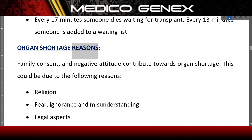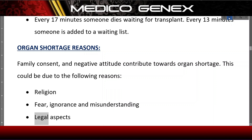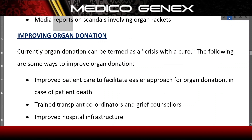Family consent and negative attitudes contribute towards organ shortage. This could be due to the following reasons: religion, fear, ignorance and misunderstanding, legal aspects, and media reports on scandals involving organ trafficking.